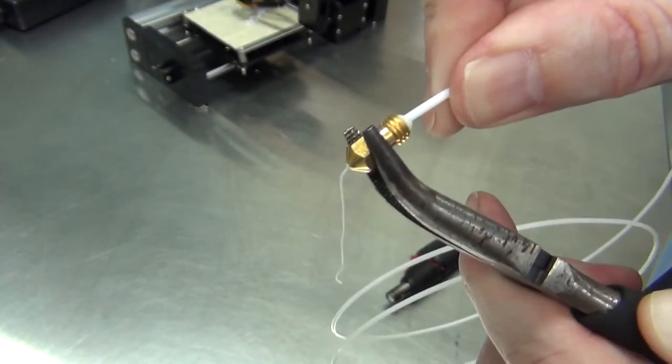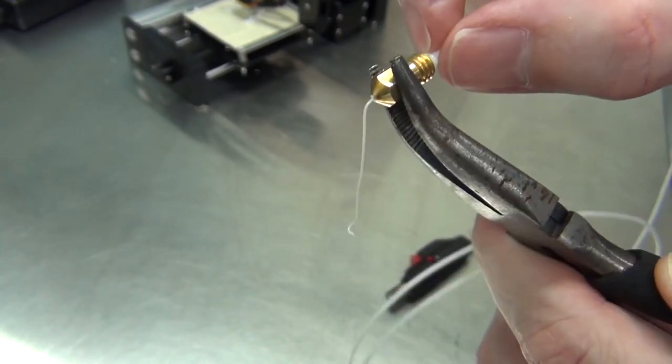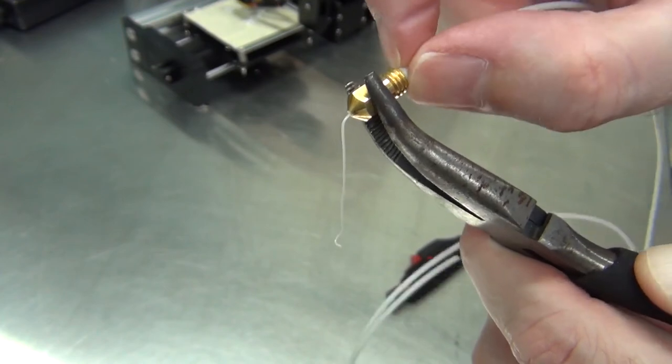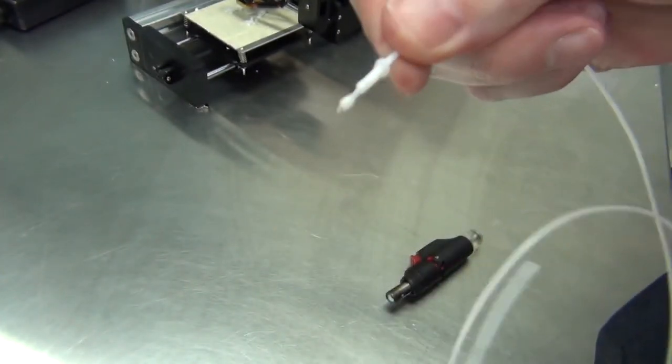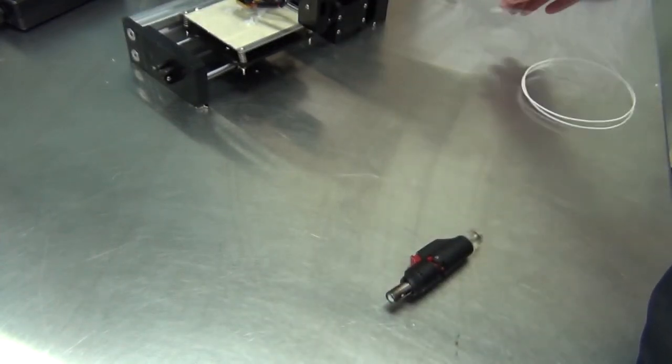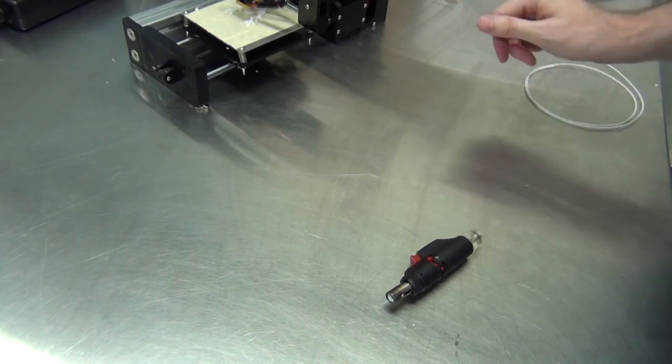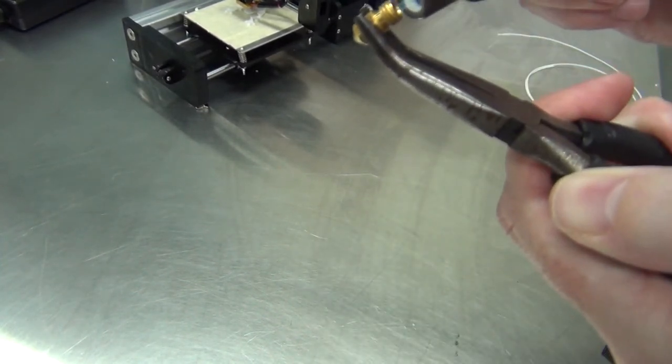And the idea is we want to let that cool down to the point where the plastic's hardened enough that it's going to keep its shape but also that it's going to grab hold of whatever's in there. You can see we've gone all the way to the tip there. It's got a little piece of filament on the end. So there's a good chance there we've grabbed out whatever it is that's been blocking the nozzle.